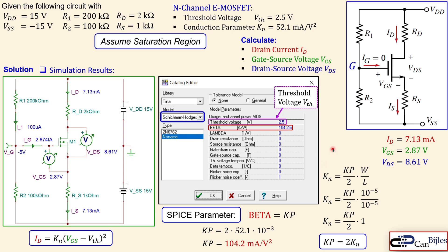That concludes our second example on the MOSFET circuit with an N-channel enhancement MOSFET, two DC voltage sources, and four resistors. We worked through the calculations and verified them in SPICE simulations. If you have any questions or comments, please let me know — see you next time, take care.